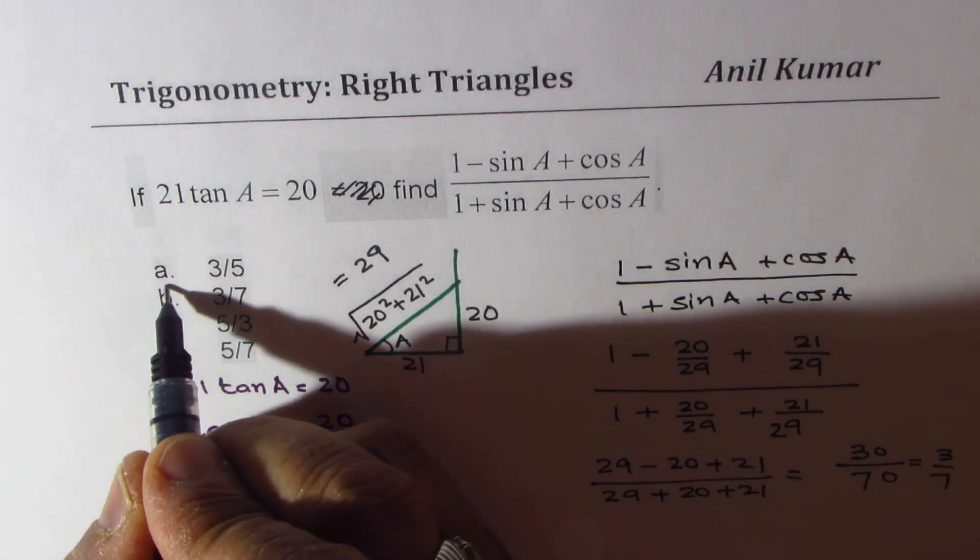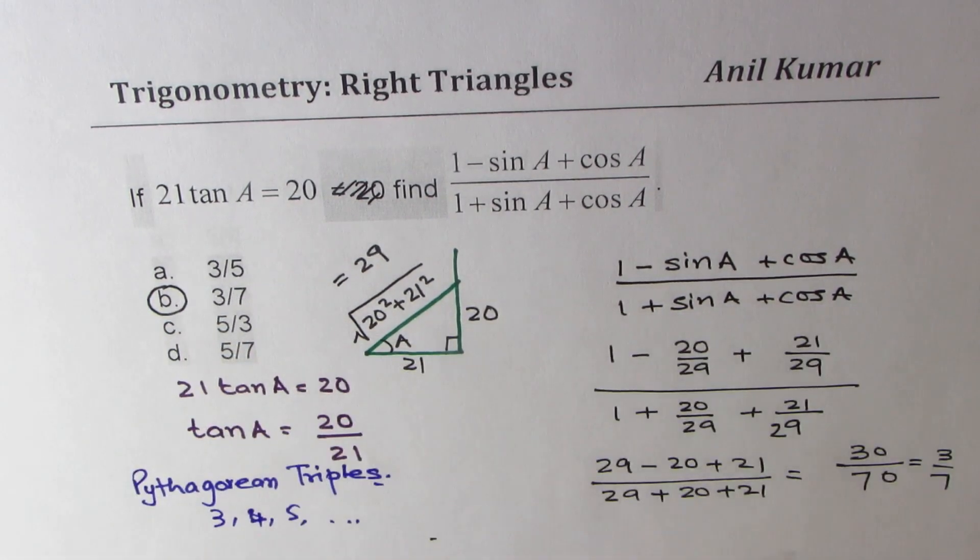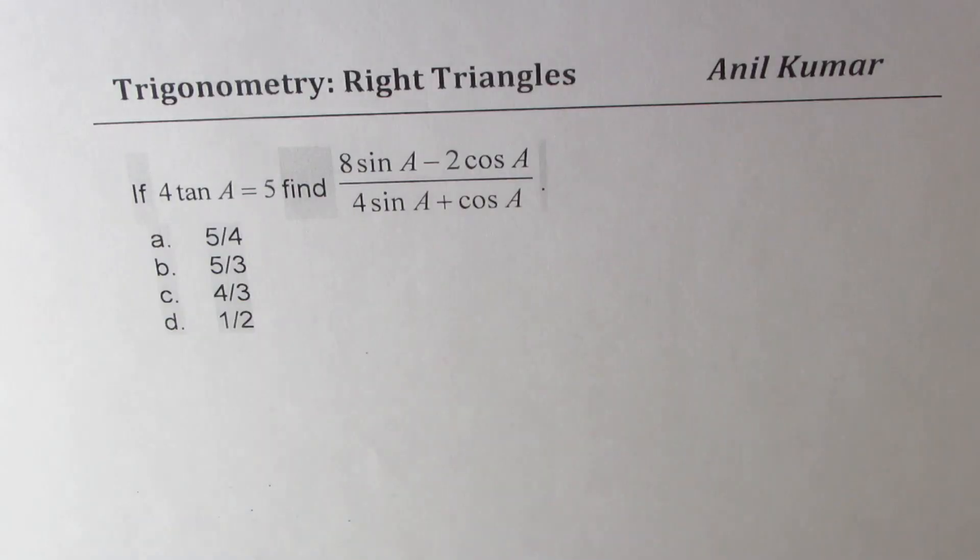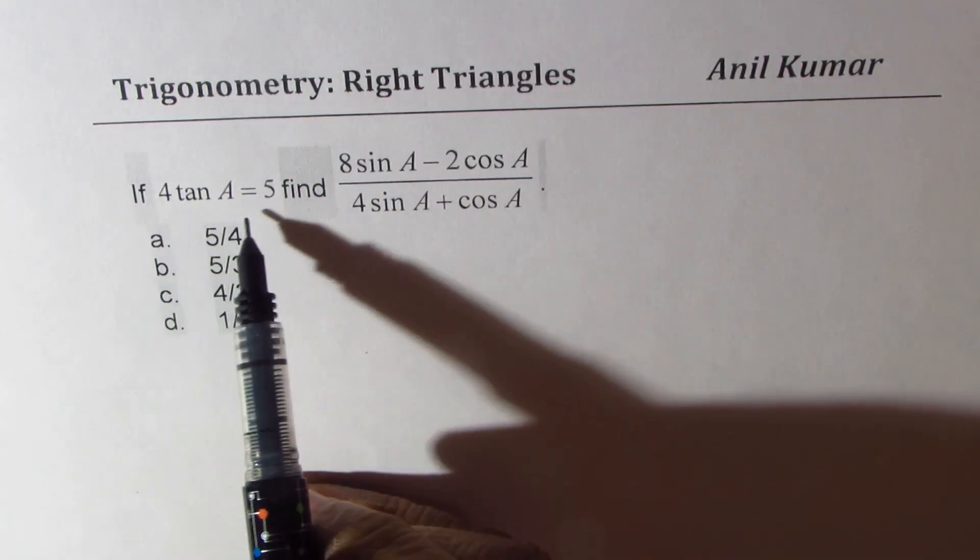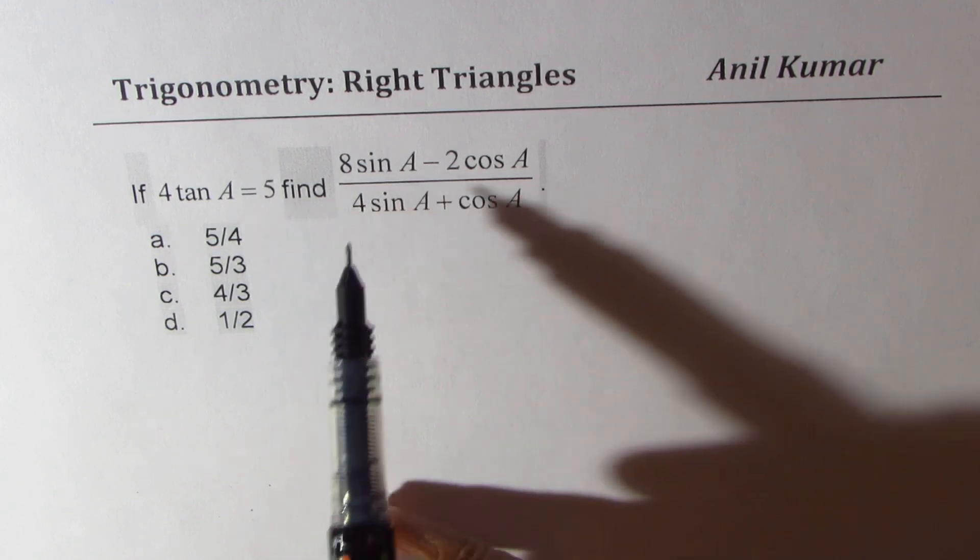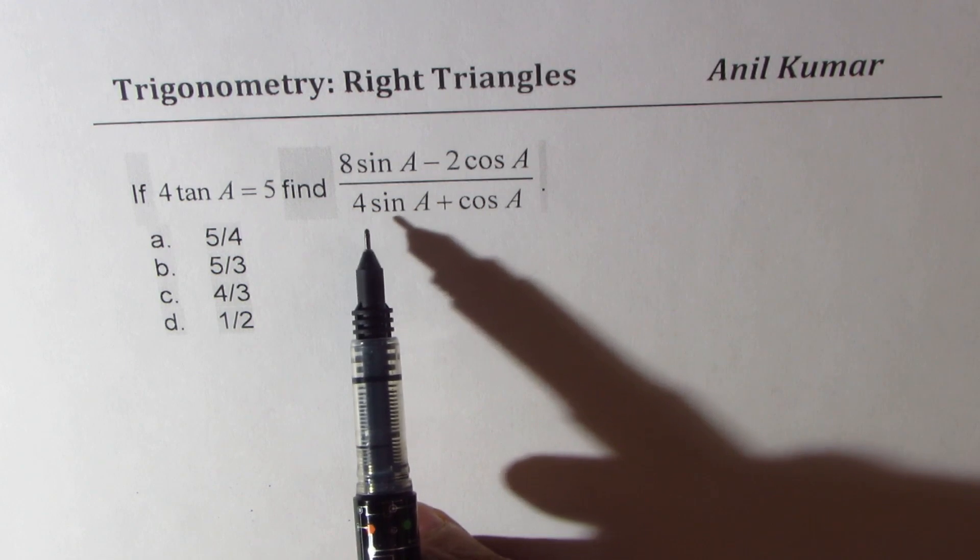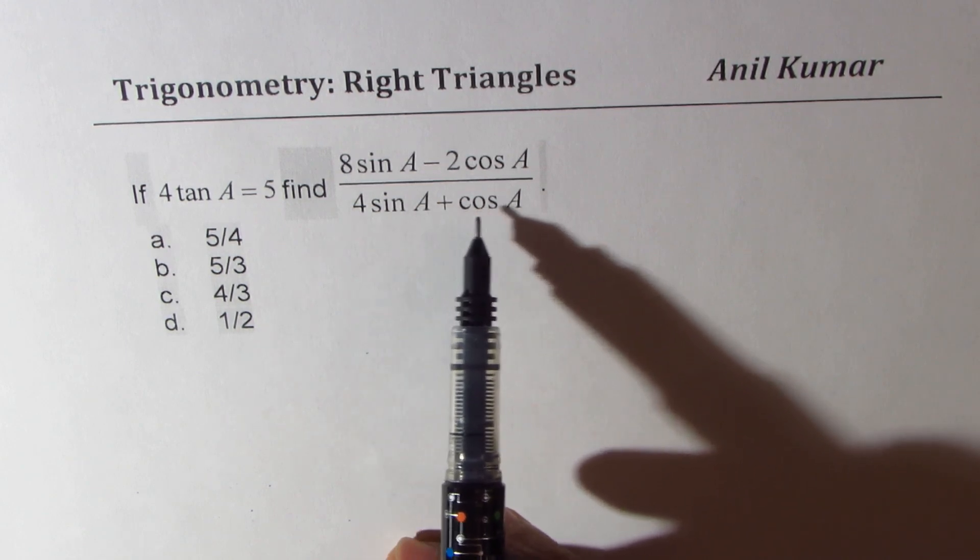Now let's look into the second example, which is 4 tan A equals 5. Find the value of (8 sin A - 2 cos A) divided by (4 sin A + cos A).